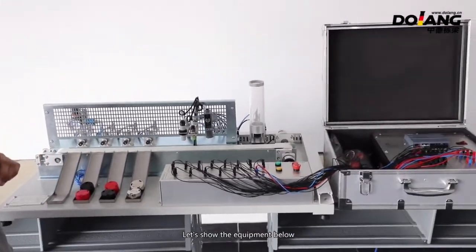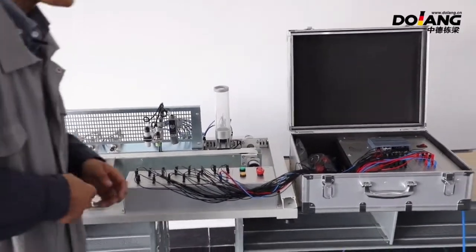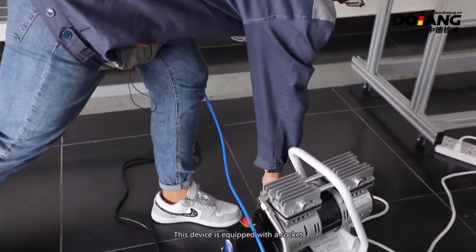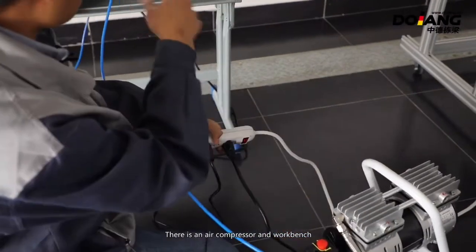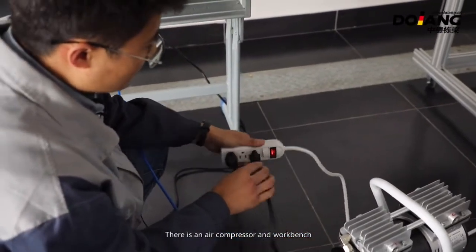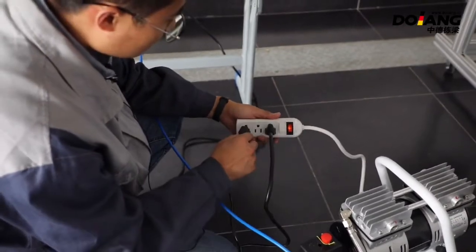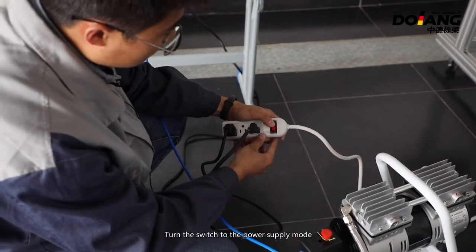Let's demonstrate the equipment now. First of all, this device is equipped with a socket. There is an air compressor and workbench. The cylinder adopts a European standard plug. After powering on, turn the switch to the power supply mode.